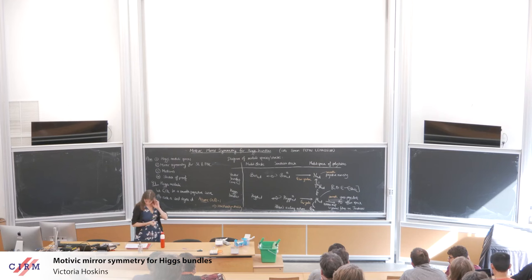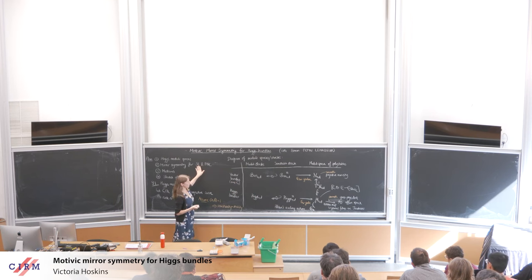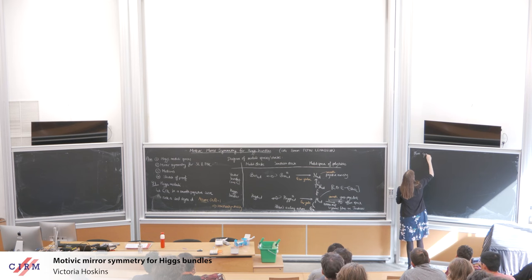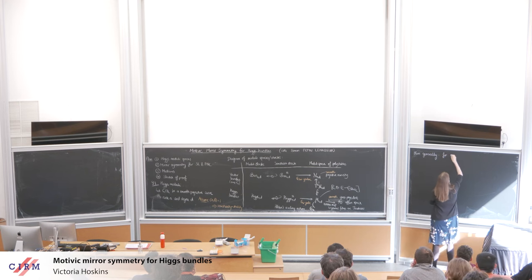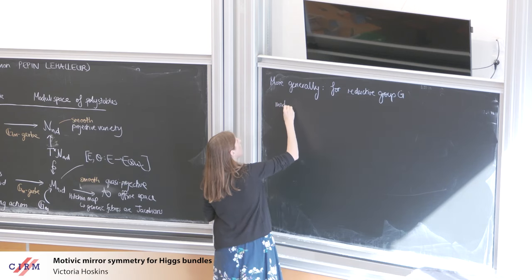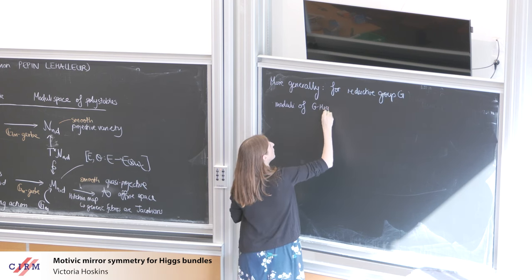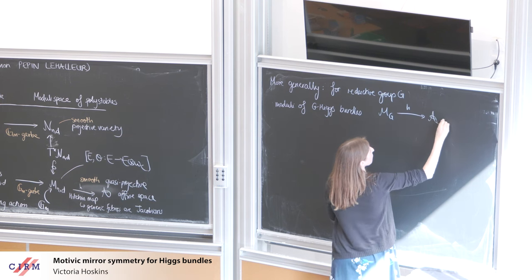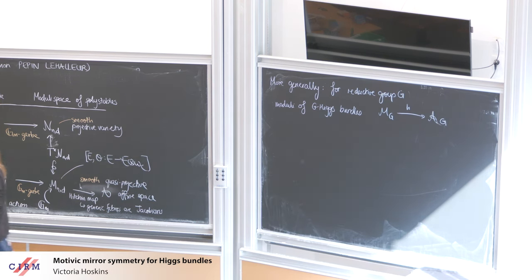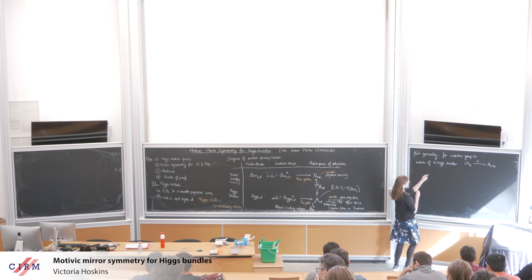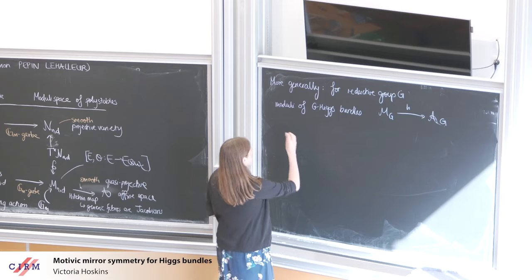Since we're going to talk about other groups beyond GL_N, let me mention the more general picture. For a reductive group G, we have moduli spaces of G-Higgs bundles on C, which also have their own Hitchin maps to some affine space. The only groups I'm going to care about in this talk, other than GL_N, are SL_N and PGL_N. I'm not going to tell you what a G-Higgs bundle is in general; I'll only explain what an SL_N Higgs bundle is.